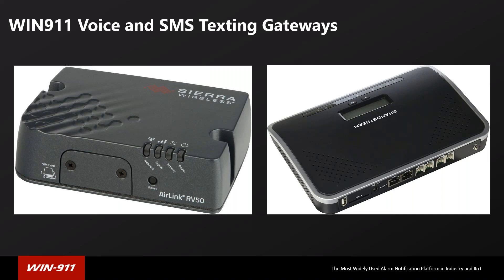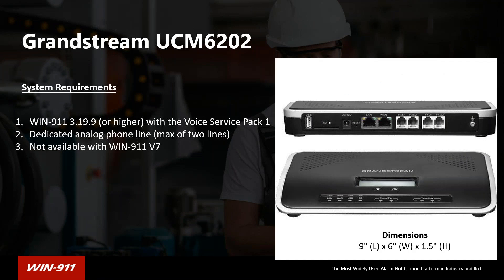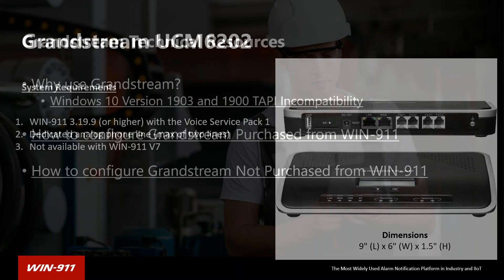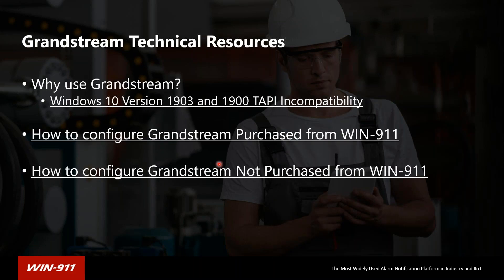Now for voice and SMS troubleshooting, starting with the Grandstream modem. This is the device you need — it has to be version 3.19.9 or higher and does not work with v7. We have KB articles on this, and there are two types: whether or not you purchased the modem from us. If you did not purchase it from us, download our config file from the KB article and upload it to your Grandstream device. If you bought it from us, it already has the config file. Either way, you'll still need to configure the customer's IP address.